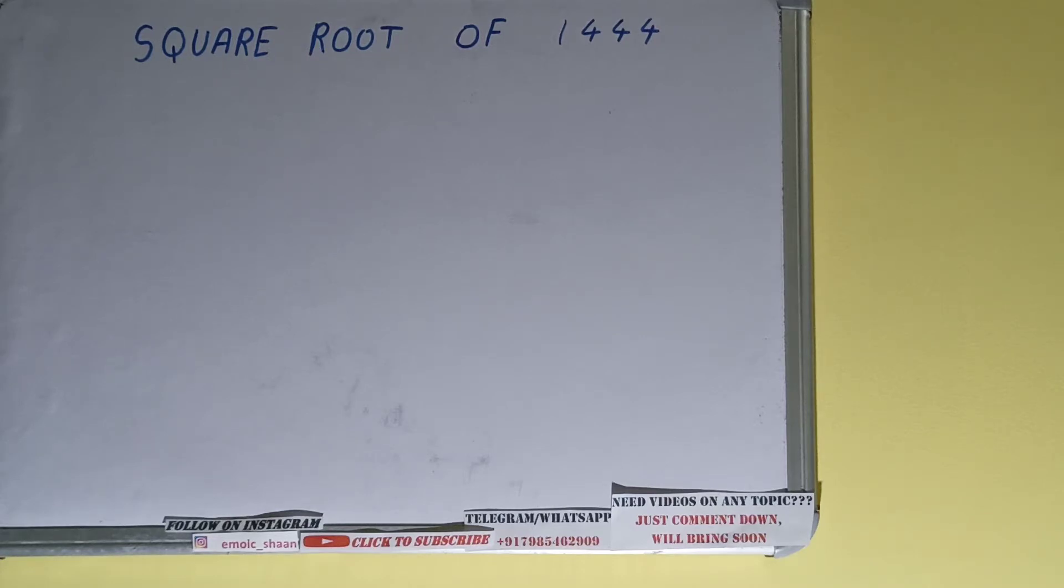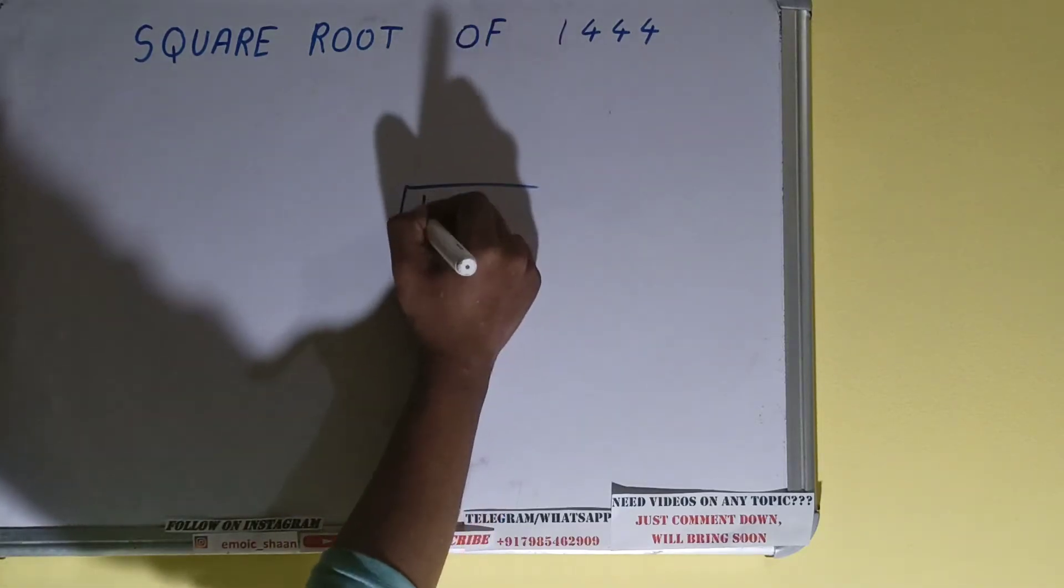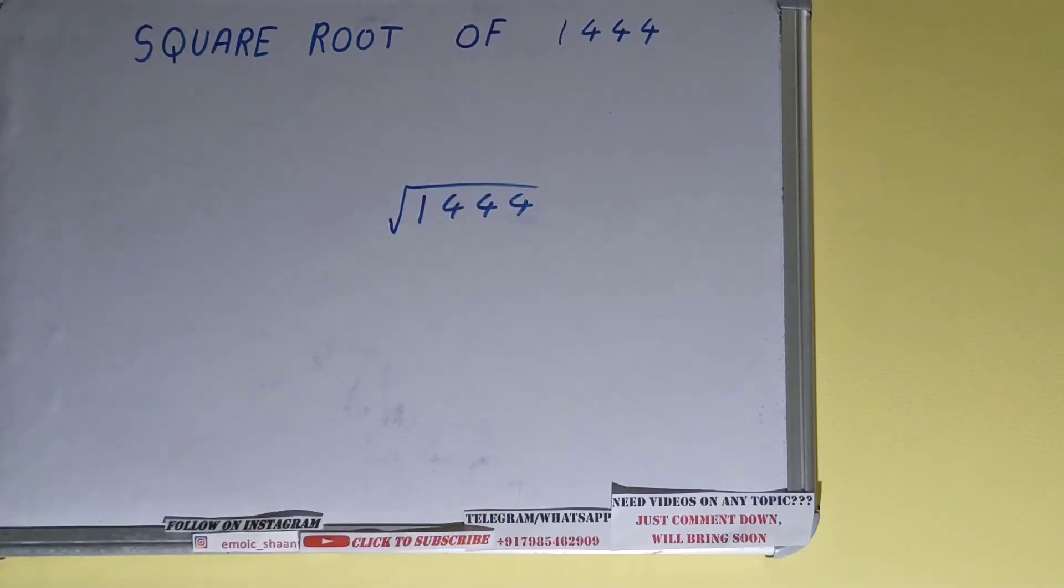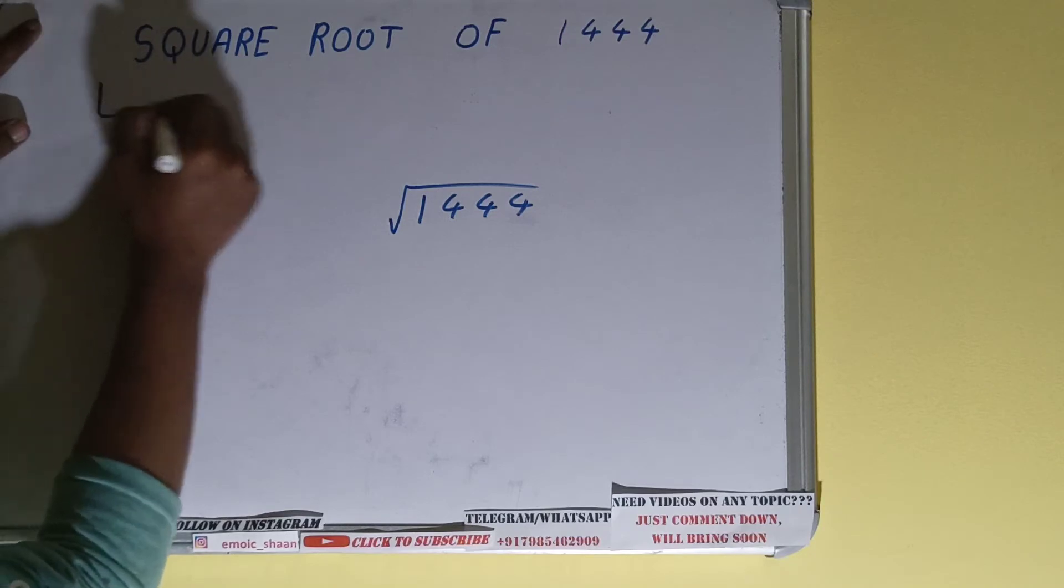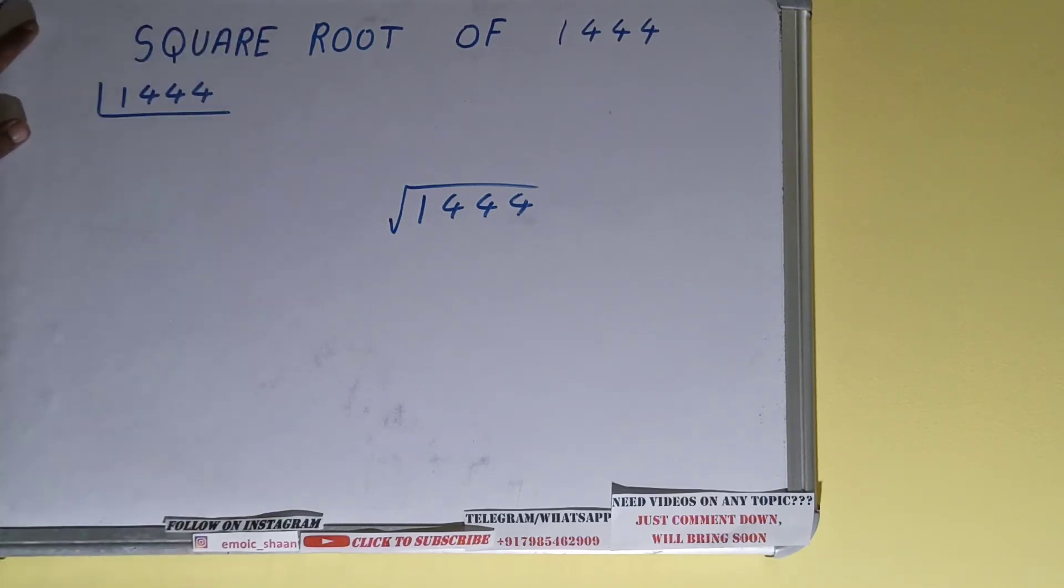Now let's write square root of 1444 - that is what we need to solve. The first step for solving this is to do the prime factorization of the number. For doing prime factorization, you should know what prime numbers are. Prime numbers are numbers that are divisible by one and the number itself, like 2, 3, 5, 7, and so on.